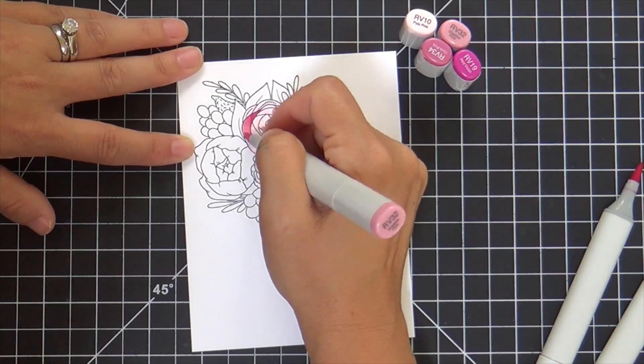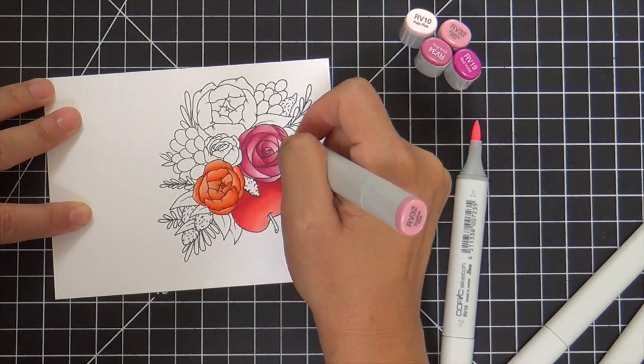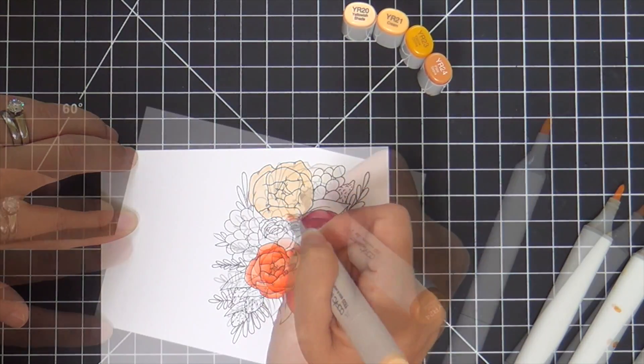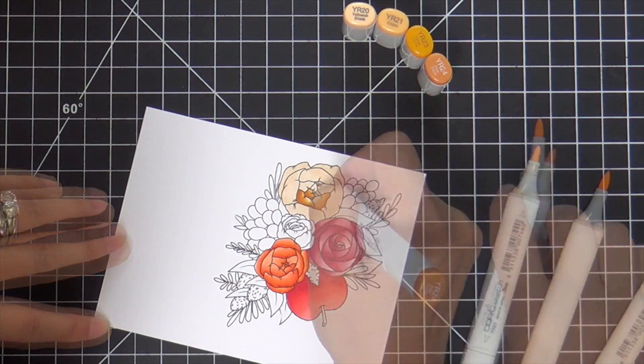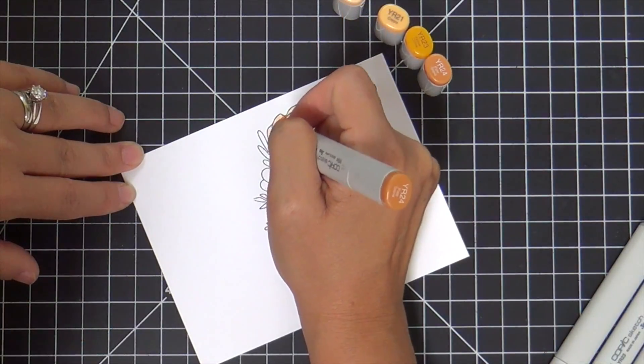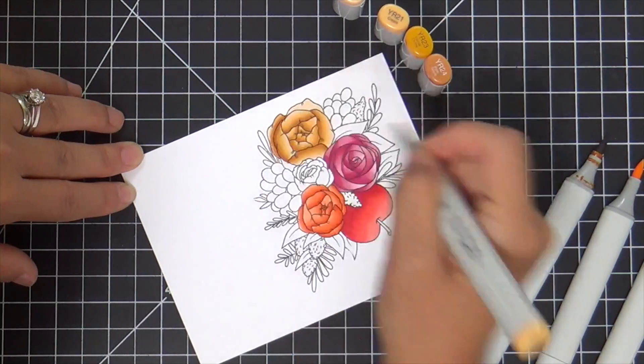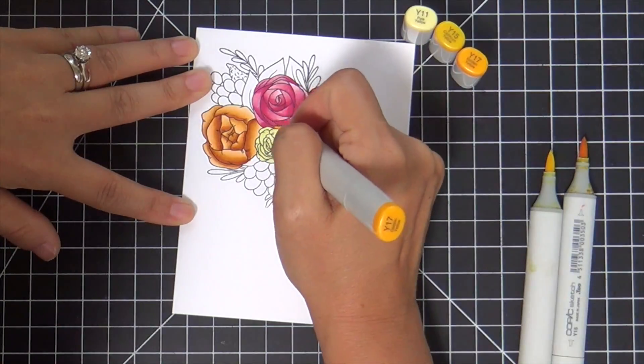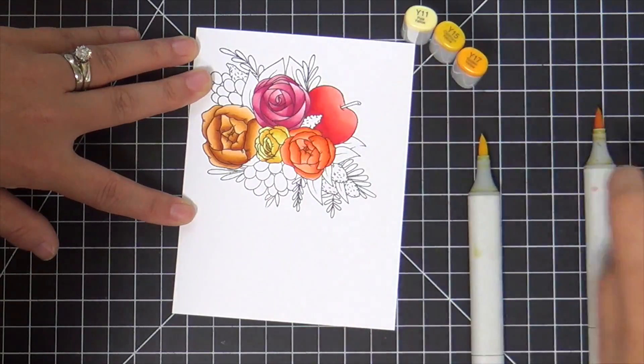I tried to go with some fallish colors. I did a bright red apple, some orange and deep plum, and a yellowy brown flower—maybe it's like a marigold. I don't even know what types of flowers these are. I'm not a botanist or a florist, but I just try to pick some colors that go together.